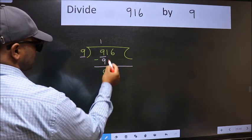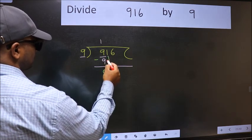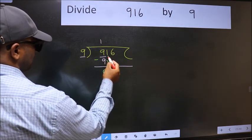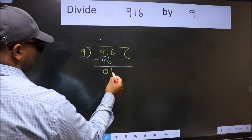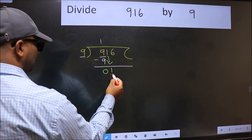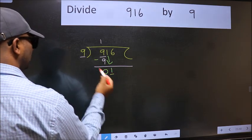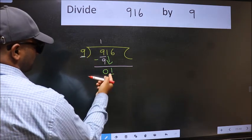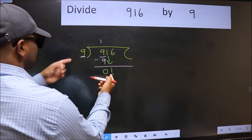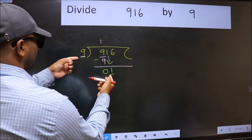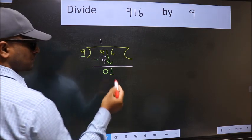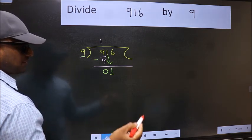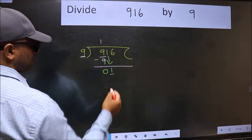After this, bring down the beside number — 1 down. Now here we have 1 and here 9. 1 is smaller than 9, so we should bring down the second number.